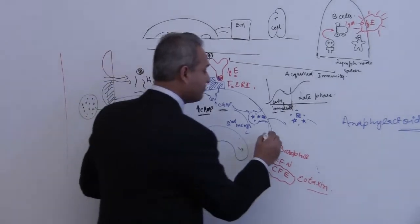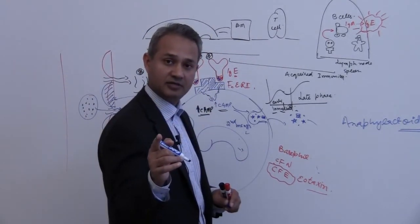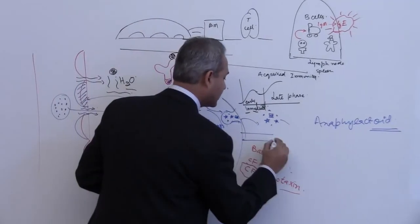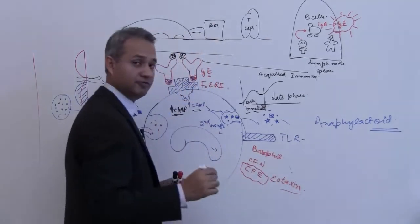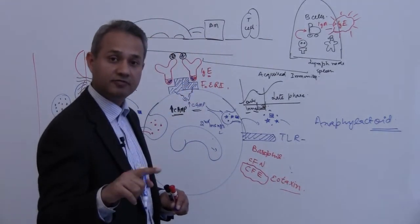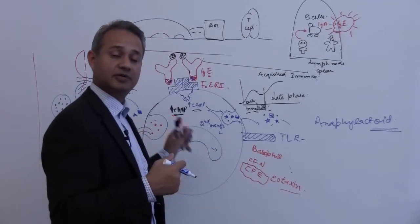These mast cells have pattern recognition receptors on them, PRRs. That is Toll-like receptor. Remember Toll-like receptors? TLR2 and 4 which work with the CD14. We talked about it in our last lecture. The Toll-like receptor is present in the mast cell and basophils as well.